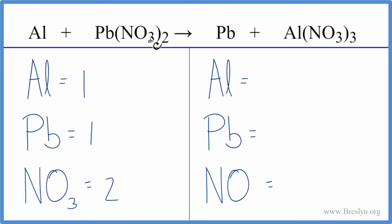On the product side, aluminum, I have one, lead, I have one, and the nitrate, I have three times the one, so I have three nitrates.